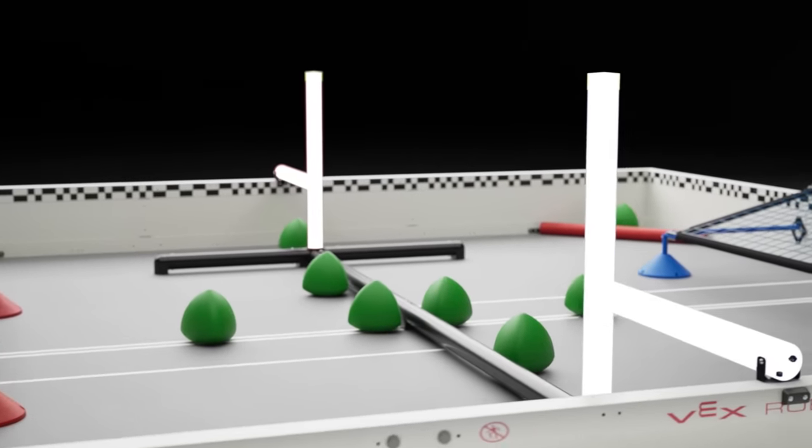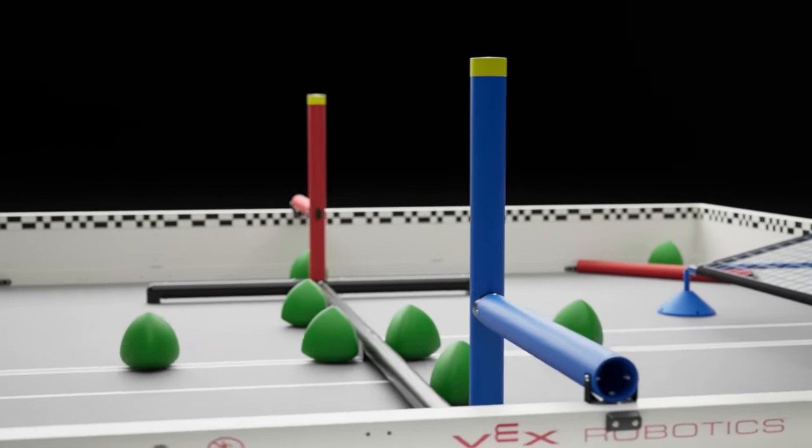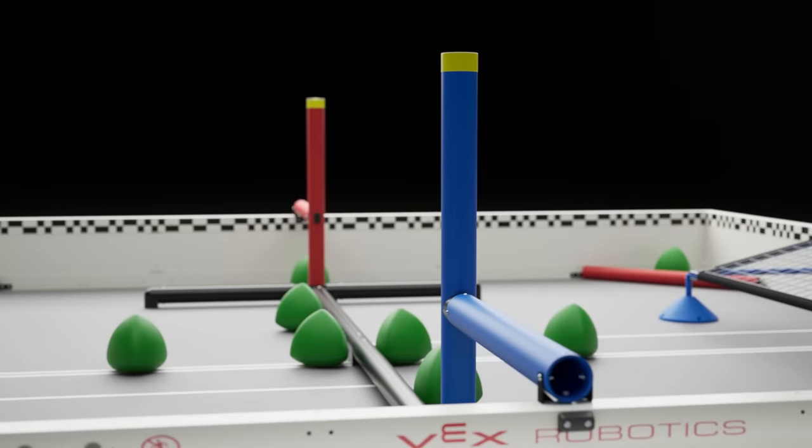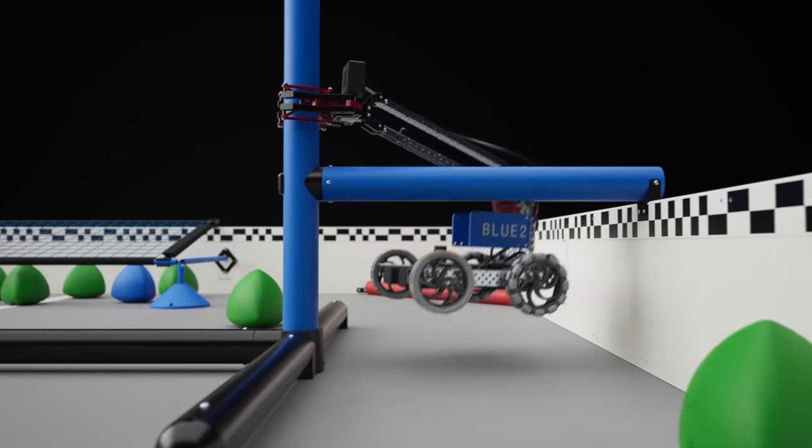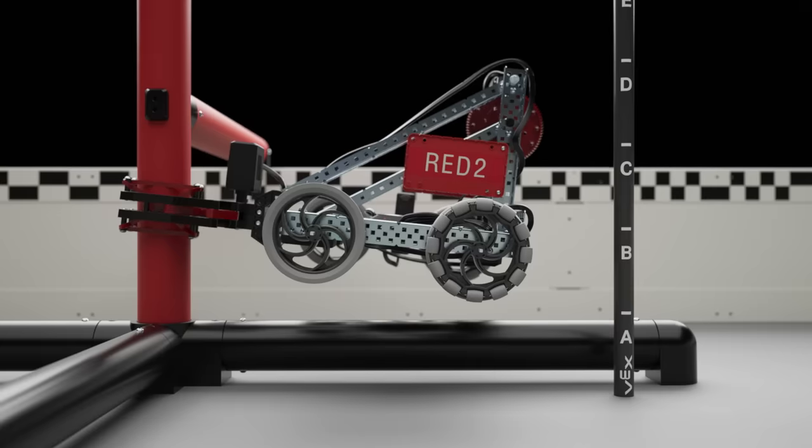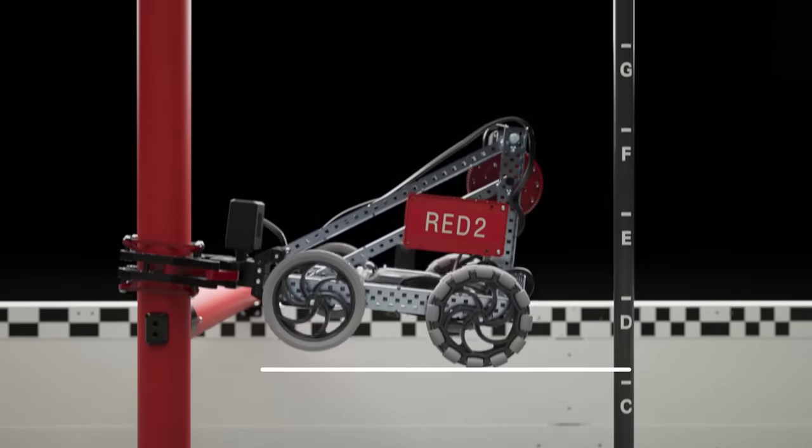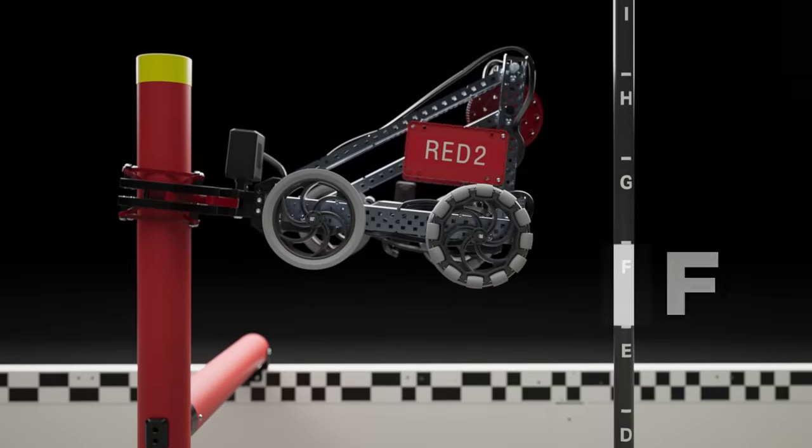The VRC over-under field also includes two sets of alliance-specific pipes on either side of the barrier. These are called elevation bars and are used at the end of the match for elevating robots. At the end of the match, each robot's height off the ground will be measured to determine their elevation tier.